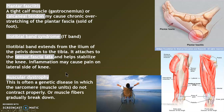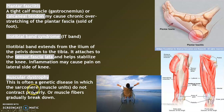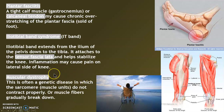Muscular dystrophy tends to be a genetic disease, though rarely a virus, infection, or trauma can cause it. In this case, the sarcomere — the functional unit where actin and myosin slide past each other — is affected. The sliding is not happening, or sometimes it could be autoimmune, and the muscle fiber just gradually breaks down.